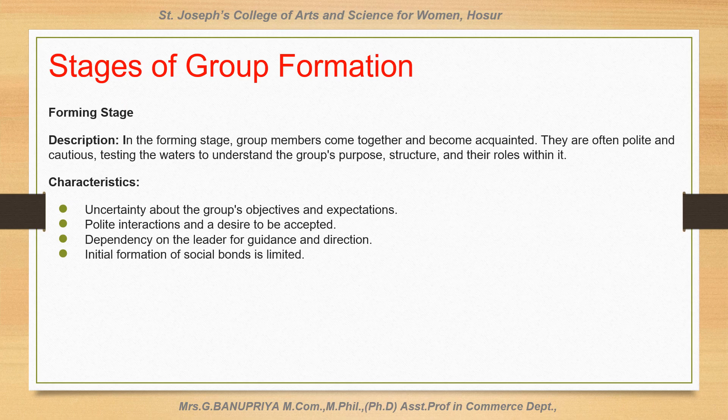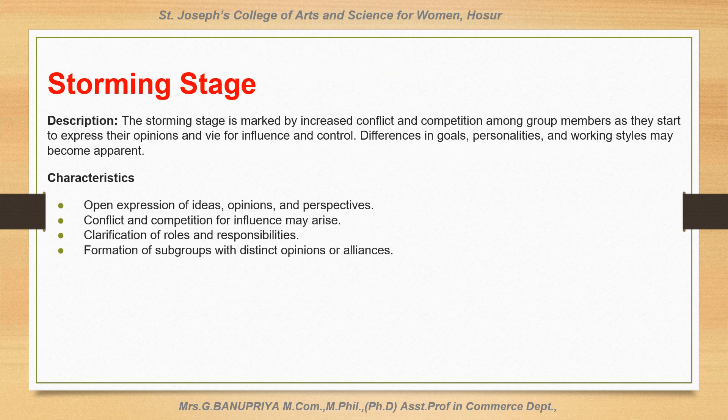Stages of group formation. There are five stages in group formation. First, the forming stage: group members come together and become acquainted. They are often polite and cautious, testing the waters to understand the group's purpose, structure and their roles within it. Storming stage: the storming stage is marked by increased conflict and competition among group members as they start to express their opinions and vie for influence and control. Differences in goals, personalities and working styles may become apparent.